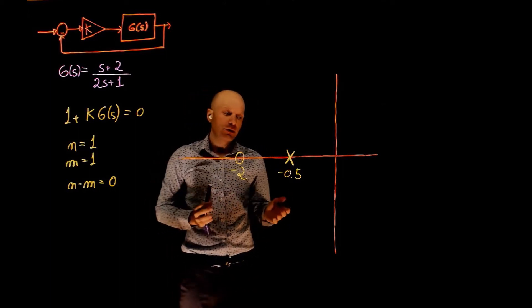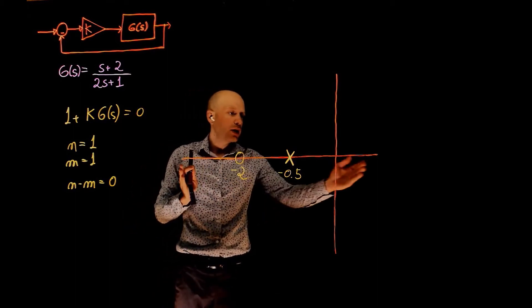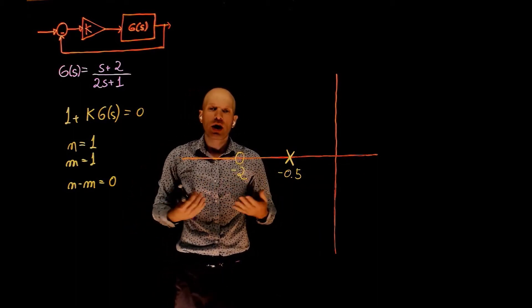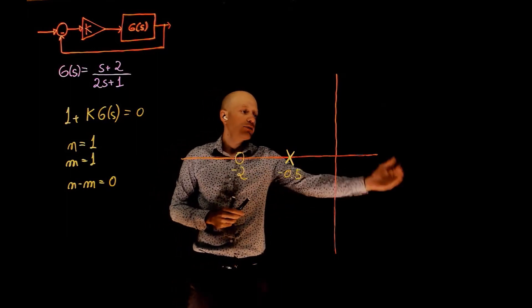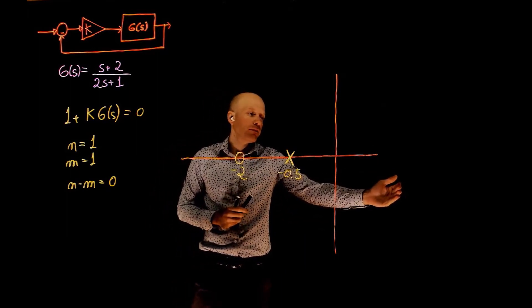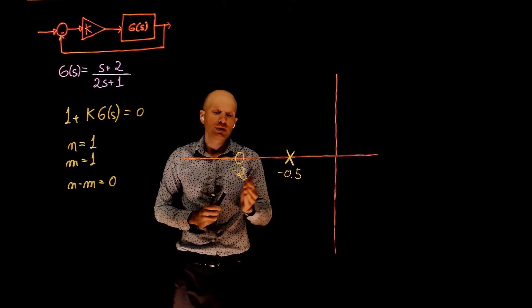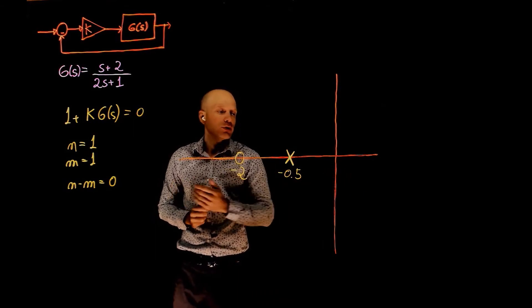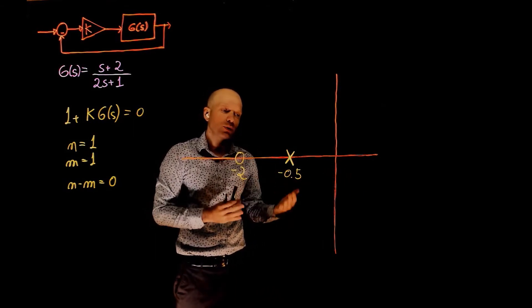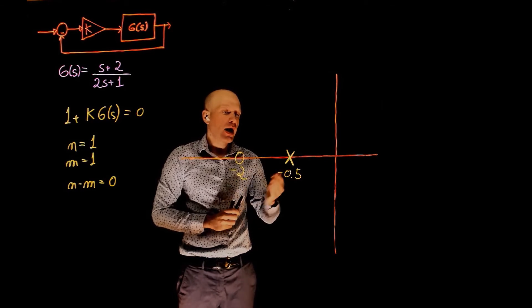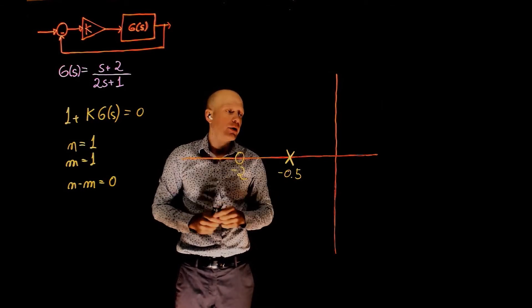Now let's apply the first rule and determine which parts of the real axis will have a root locus. To do that, we can start from positive infinity and count the number of poles and zeros as we move to the left.